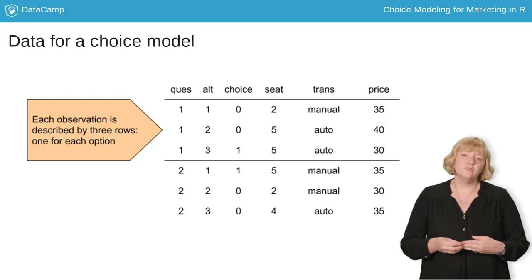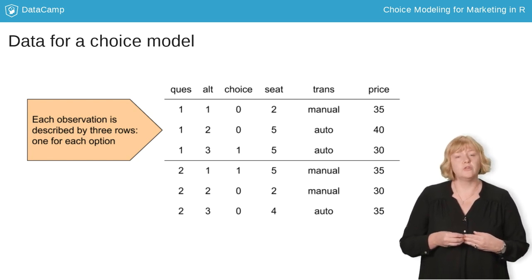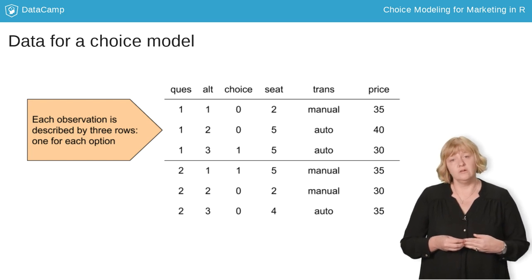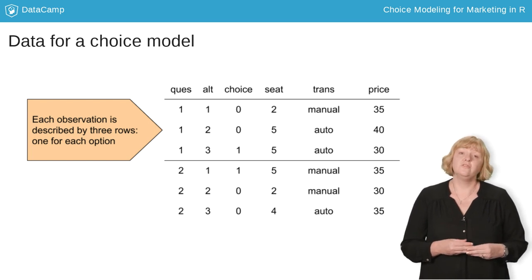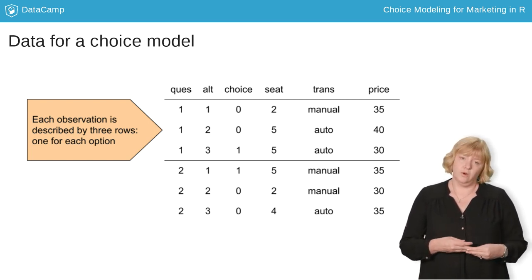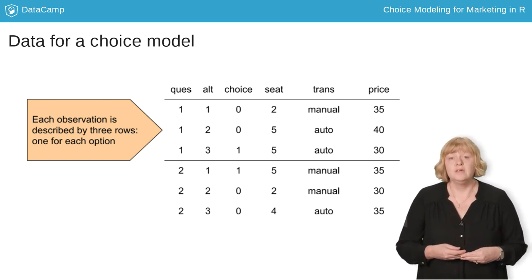For instance, the first three rows of this data describe a choice from among three different sports cars. The first car was a two-seater with a manual transmission for $35,000. The second two options were both automatic five-seaters, with one at $40,000 and the other at $30,000.